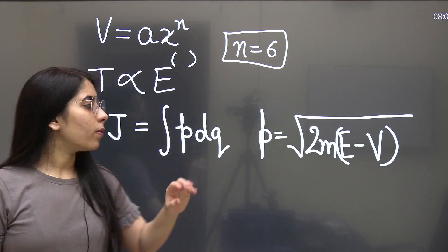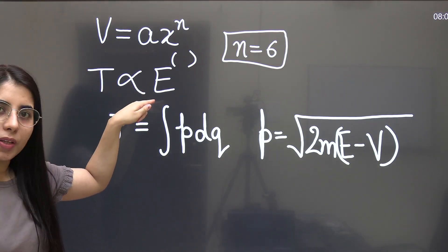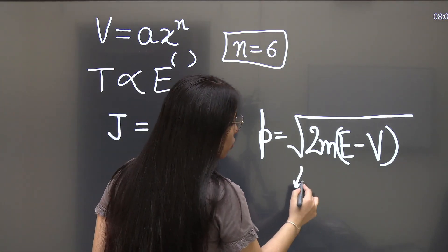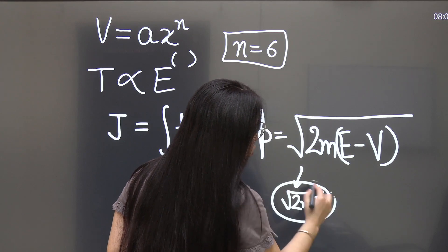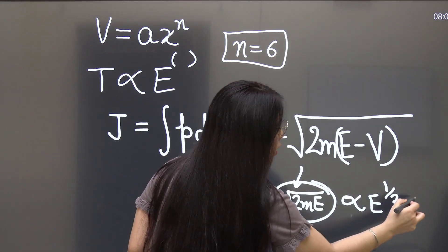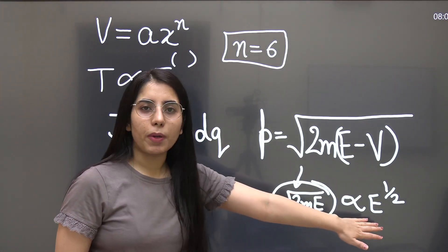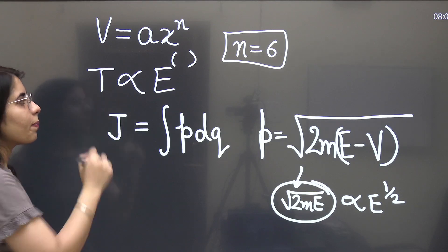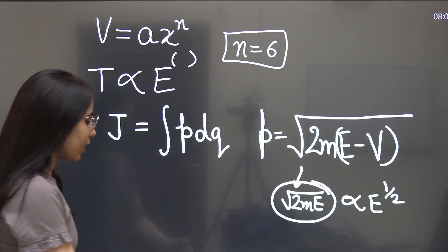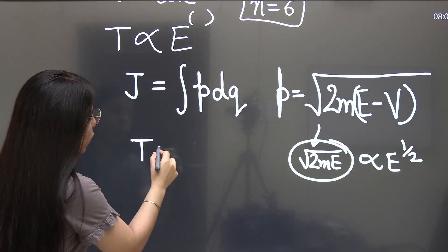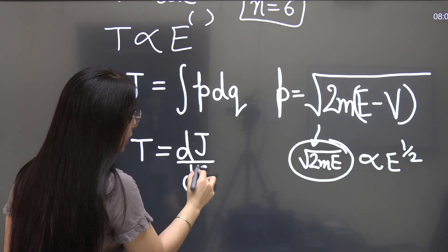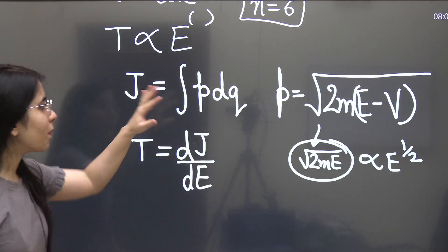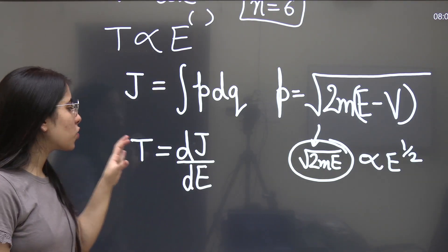Now in this case, if we want to work on finding the dependency on E, from the momentum expression we just need to write the expression root 2mE. If we need to write the energy dependency, we will just write this much — basically it's going to show the dependency on E to the power of half. So if you just want to write the energy term, you will be taking this part only. The time period is related to the action-angle variable: T is equal to dJ upon dE. Once you get the time period, you can simplify the frequency expression as well. The point is how to simplify this part and get the final dependency of J on E, and then we put it here to get our final answer.